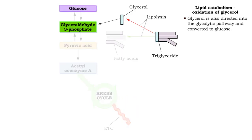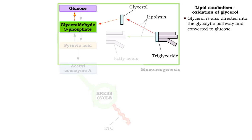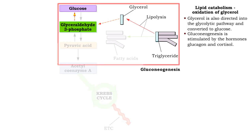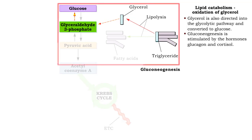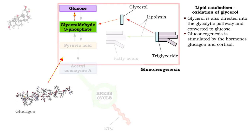Glycerol can then be shunted into the glycolytic pathway and converted to glucose. This process, known as gluconeogenesis, is stimulated by the hormones glucagon and cortisol.